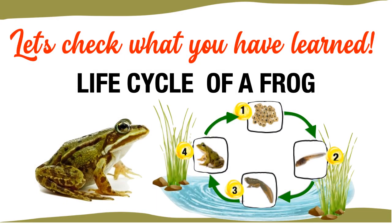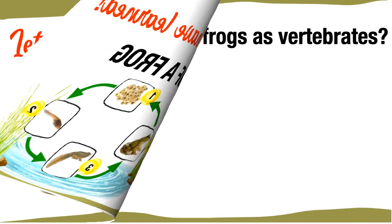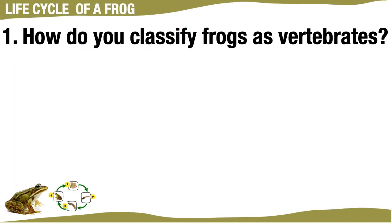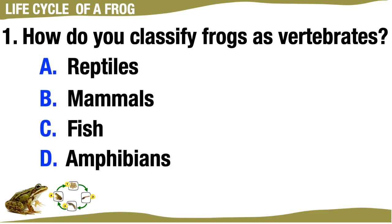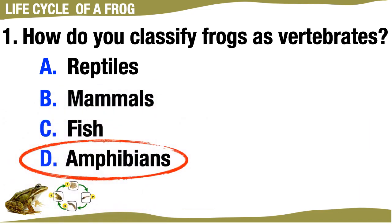Now let us check what you have learned from the life cycle of a frog. How do you classify frogs as vertebrates? A. Reptiles. B. Mammals. C. Fish. D. Amphibians. The correct answer is D, Amphibians.